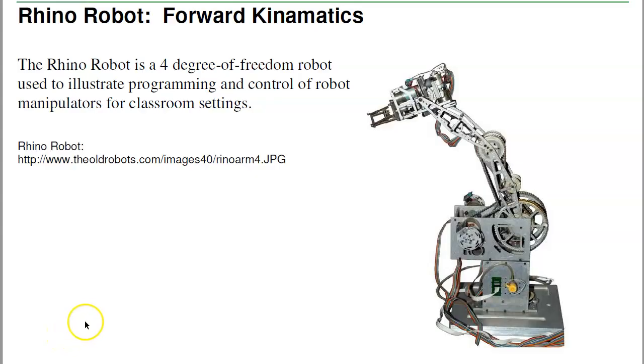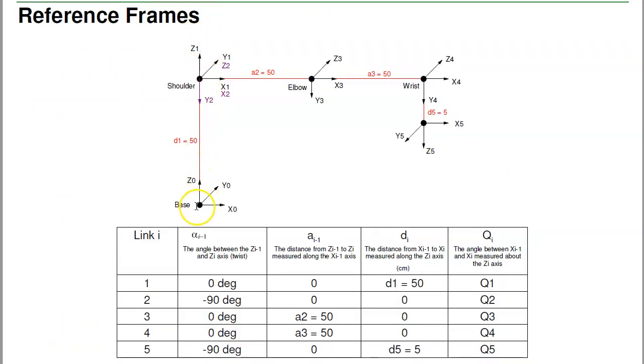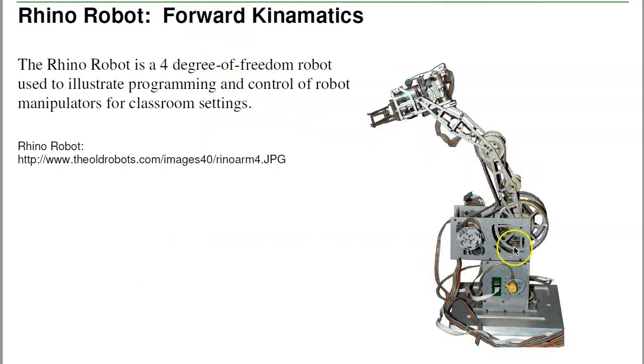Starting out, we want to come up with the Forward Kinematics. To do that, you'll find the reference frames. Here's the base, comes up to the shoulder. The shoulder rotates about the base, that's axis C1. It can also spin up and down. This is the shoulder, spins around, this joint goes up and down, takes you to the elbow.